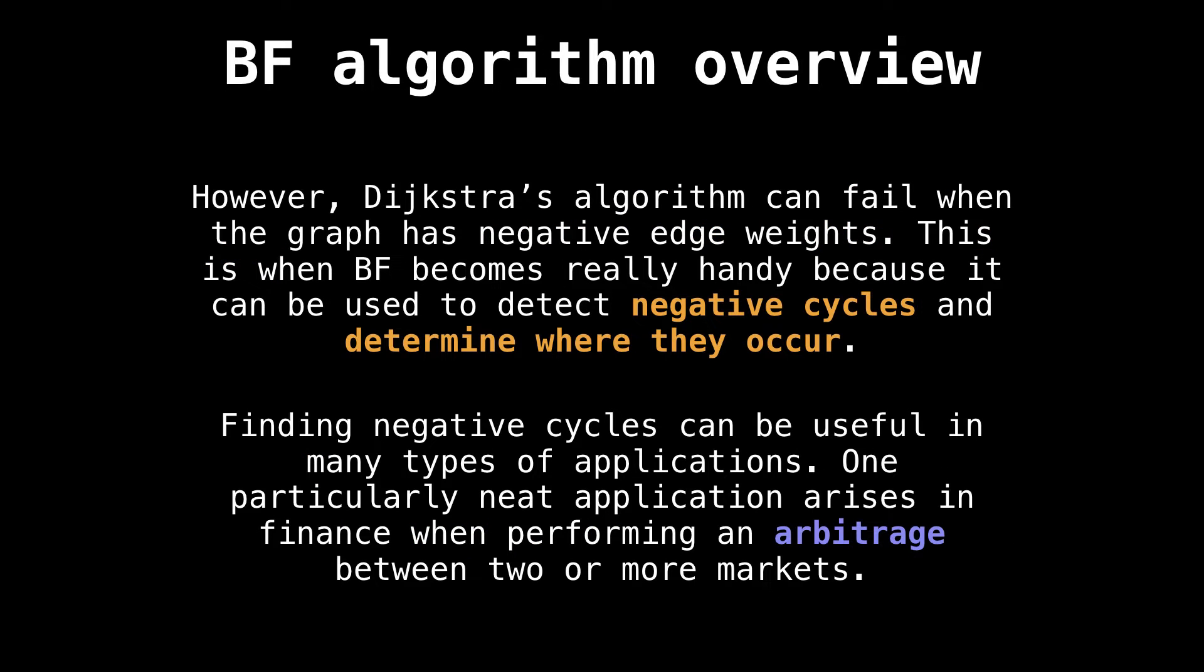So when would we ever use the Bellman-Ford algorithm? The answer is when Dijkstra's fails, and this can happen when the graph has negative edge weights. When a graph has negative edge weights, it is possible that a negative cycle can manifest itself. And when it does, it is of critical importance that we are able to detect it. If this happens and we're using Dijkstra's to find the shortest path, we'll get stuck in an infinite loop because the algorithm will keep finding better and better paths.